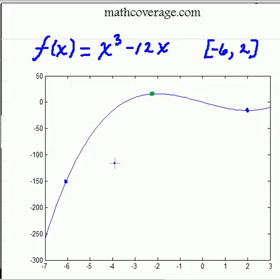In this problem, we're going to be trying to find the absolute min and the absolute maximum. And we've got f(x) = x³ - 12x on this closed interval between -6 and 2.